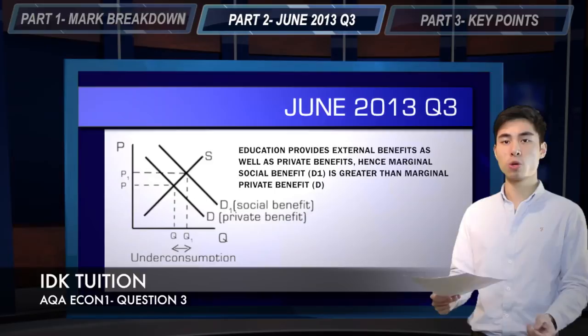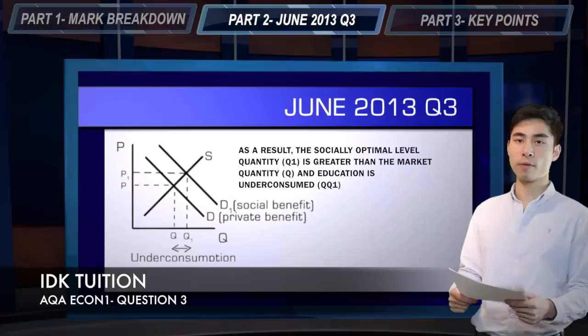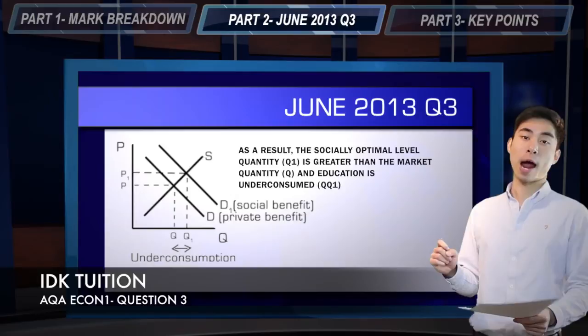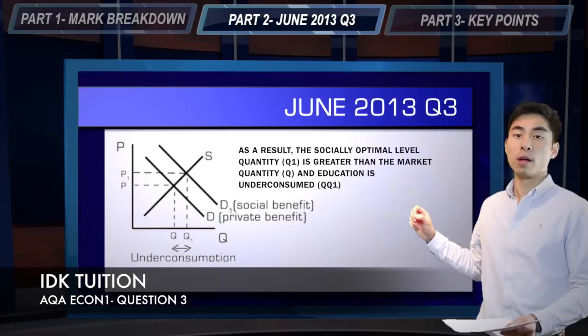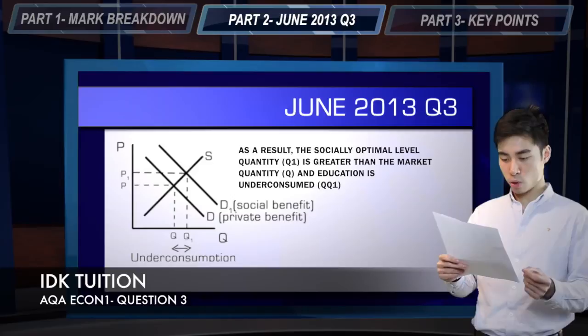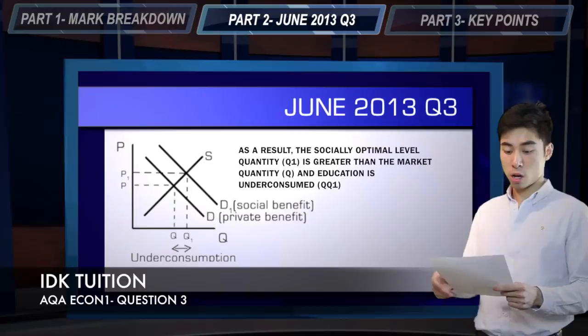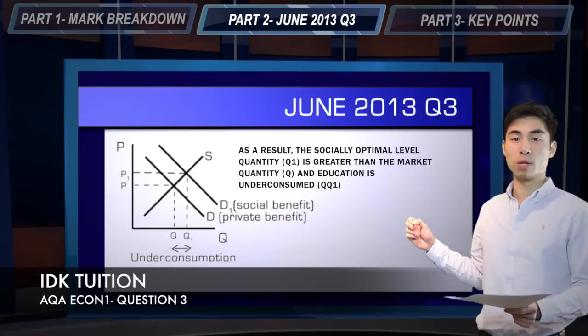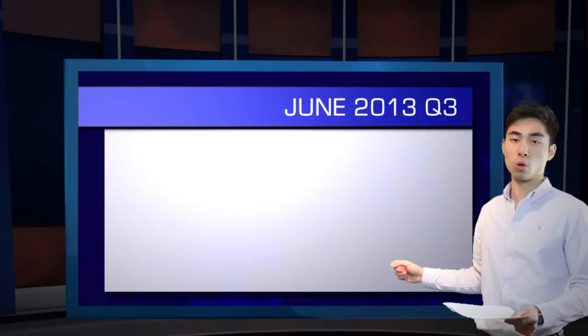That's going to be your first mark in your chain of reasoning. Second, you want to explain what happens in terms of your equilibrium values. Here, marginal social benefit is greater than marginal private benefit, and as a result we have Q — which is our equilibrium quantity if left to the market — whereas Q1 is your socially optimal equilibrium value. That picks up another two marks. Then you get another two marks by saying that therefore merit goods such as education are under-consumed if left to the market mechanism, under-consumed from Q to Q1.